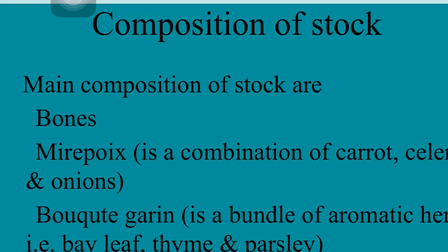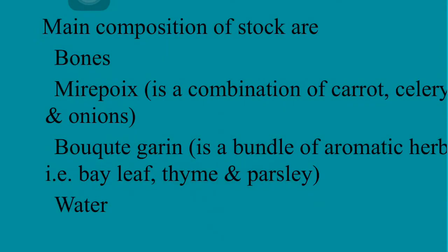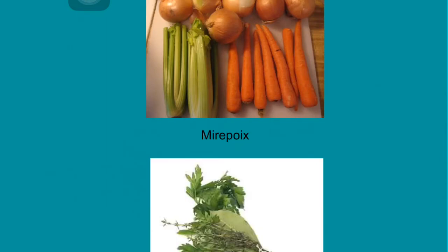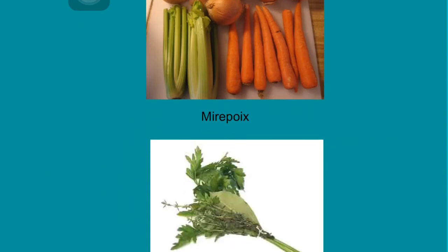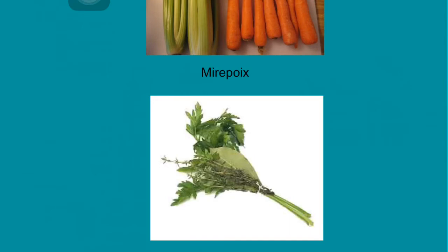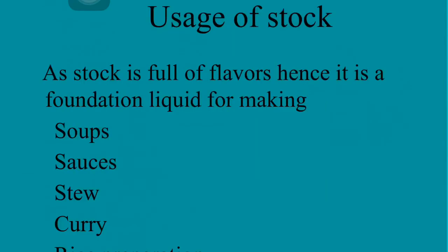The third thing in stock is bouquet garni. Bouquet garni is a French term — 'bouquet' means a bundle, and 'garni' means herbs. It is a bundle of herbs: bay leaf, thyme, and parsley. These two photos I am showing you are bouquet garni and mirepoix. In the upper photo of mirepoix you can see carrots, celery, and onion. The lower photo shows bouquet garni with bay leaf and thyme.